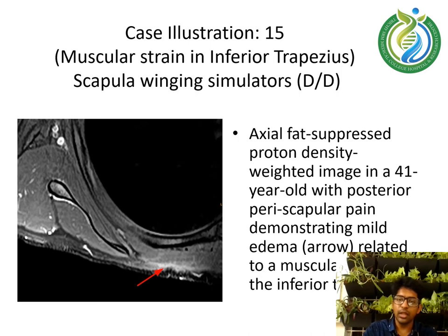Case illustration 15 — Muscular strain in the inferior trapezius. An axial fat-suppressed proton density-weighted image in a 41-year-old with posterior periscapular pain demonstrates mild edema related to muscular strain at the inferior trapezius.